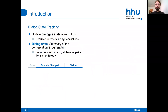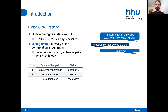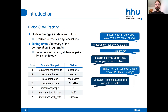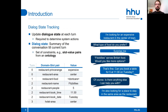Here is an example to explain the task at hand. In order to recommend a restaurant to a user, the system needs to know preferences in terms of price, location, and so on. To do that, the system maintains a dialogue state, which is the summary of the conversation until the current turn. It forms a set of constraints, usually in the form of slot-value pairs. Slots are concepts that the user can talk about with the system, and values are instances of those concepts. Some examples you see here in the table.